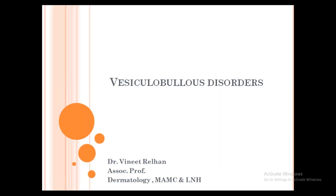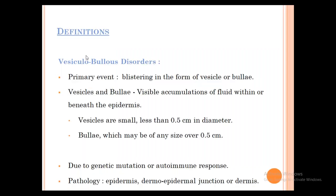A vesicle is something which is less than 0.5 centimeter in size and a bulla is something which is more than 0.5 centimeter in size. In vesicobullous disorders, the primary event is the formation of a blister — blistering in the form of a vesicle or a bulla. Vesicles and bullae are basically accumulation of fluid within or beneath the epidermis.